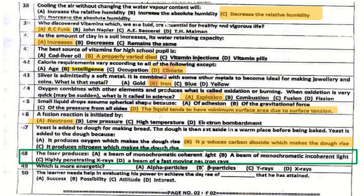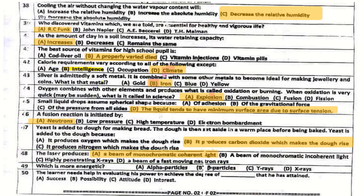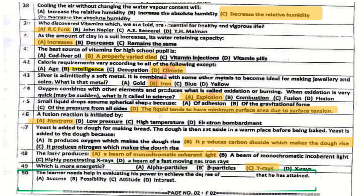Question number 48: The laser produces a beam of monochromatic coherent light. Question number 49: Which is more energetic? Gamma rays are more energetic. Question number 50 (last question): The learner needs help in evaluating his power to achieve the degree of success that he has attained.